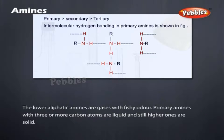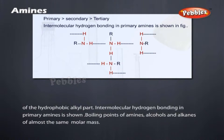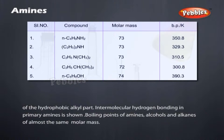Physical Properties: The lower aliphatic amines are gases with fishy odour. Primary amines with three or more carbon atoms are liquid, and still higher ones are solid. Lower aliphatic amines are soluble in water because they can form hydrogen bonds with water molecules. However, solubility decreases with increase in molar mass of amines due to increase in size of the hydrophobic alkyl part. Higher amines are essentially insoluble in water. Intermolecular hydrogen bonding in primary amines is shown in the figure.